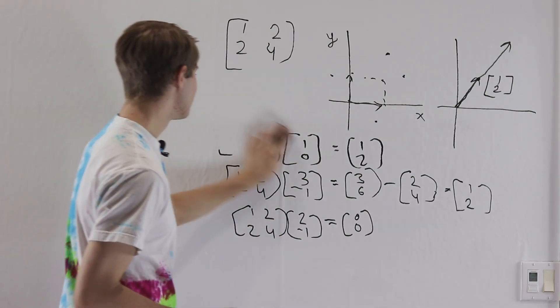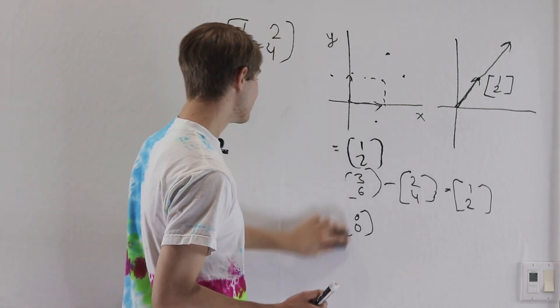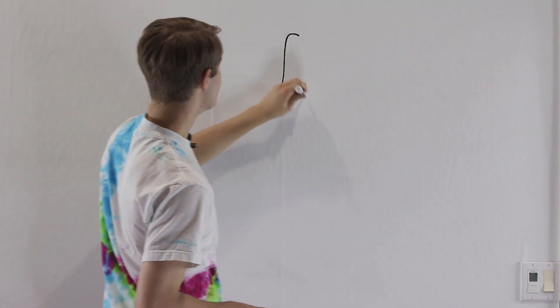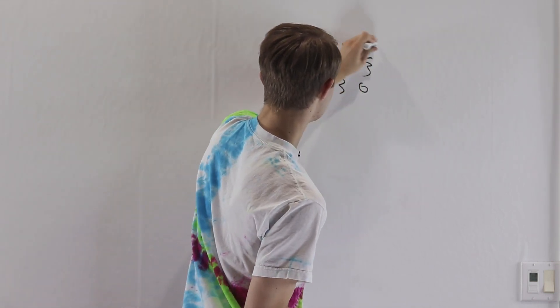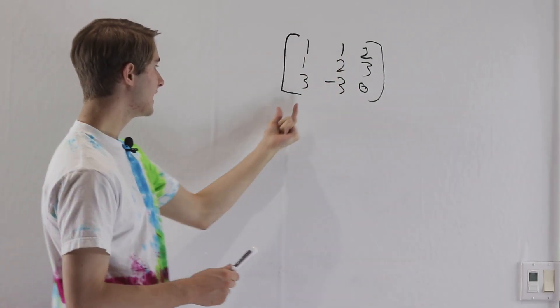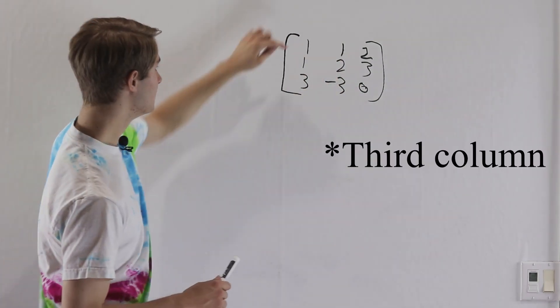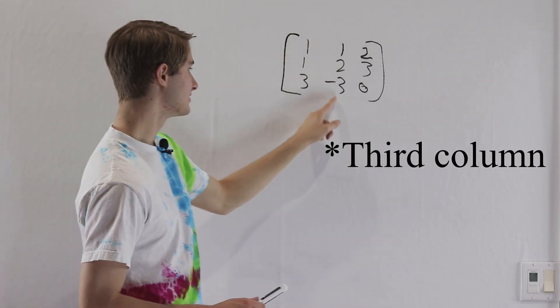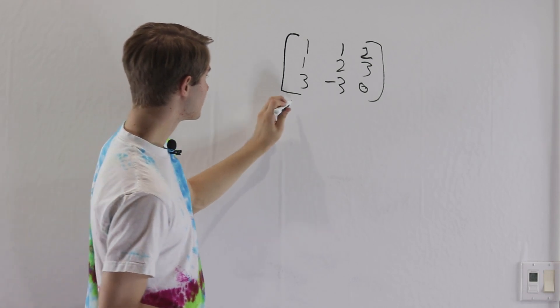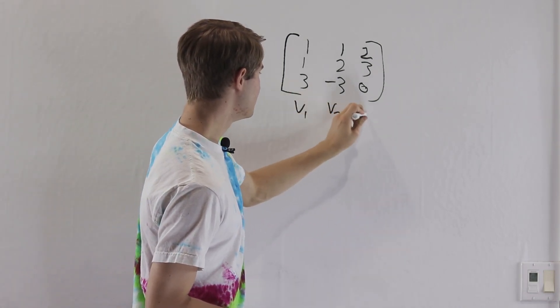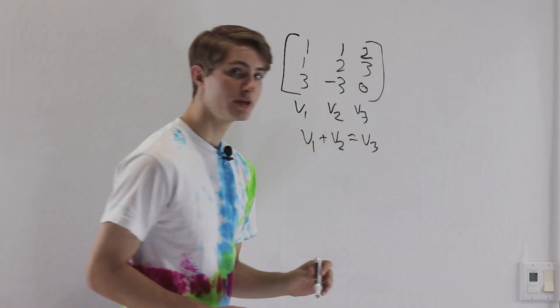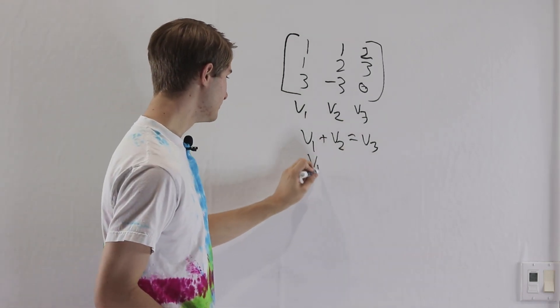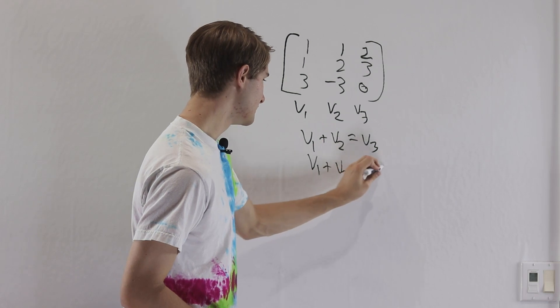Does this apply in three dimensions? Yes — it's a little bit different, but still very similar. Let's look at the 3x3 matrix: [[1,1,2],[1,2,3],[3,-3,0]]. For this matrix, if we add up the first two columns, we get the third column: 1+1=2, 1+2=3, 3+(-3)=0. What that means — if we call the columns V1, V2, and V3 — is that V1 + V2 = V3. If we subtract V3 from both sides, we get V1 + V2 - V3 = 0.